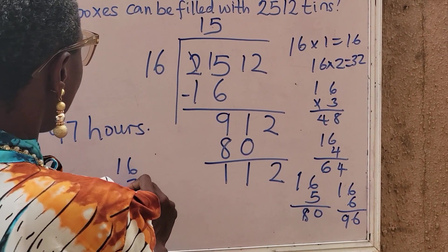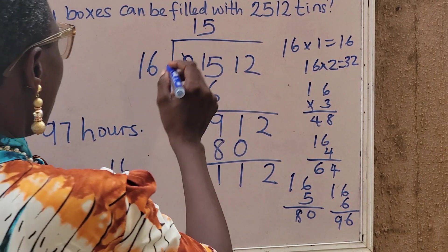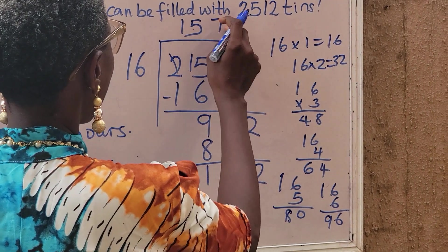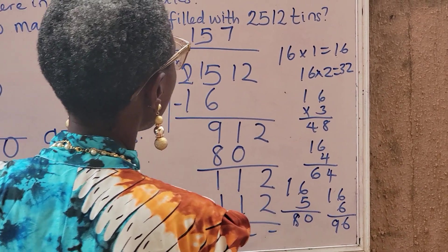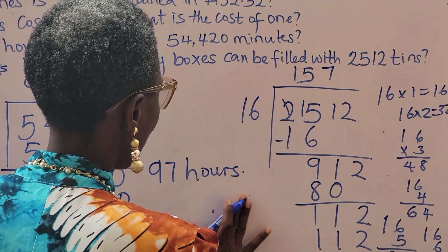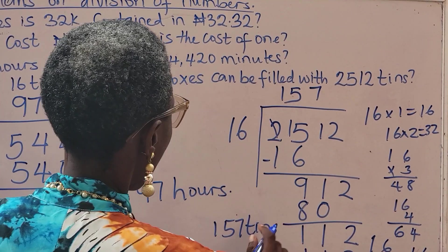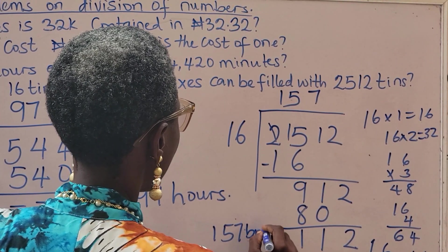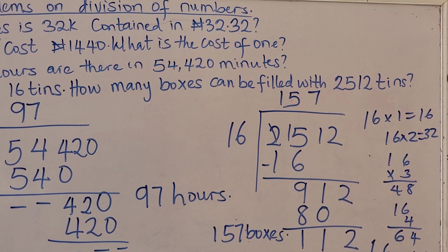16 times 7 is 112. So it means I can have 157 boxes. 157 boxes I will need to fill up. Thank you.